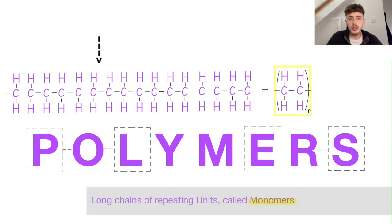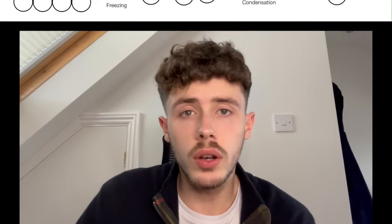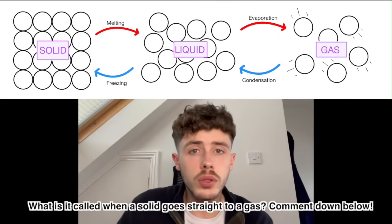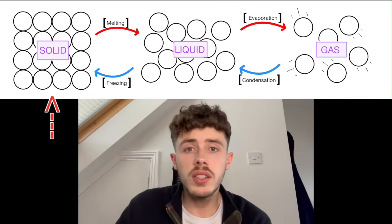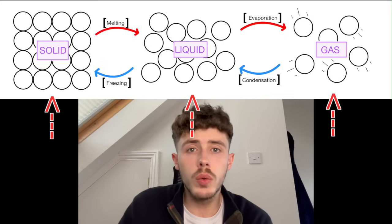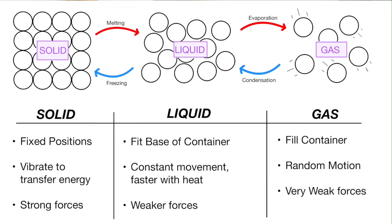After this, polymers. Polymers are long chains of repeated units, also known as monomers. And then we have the three states of matter: solid, liquid, and gas. It is important that you know each of the terms for switching between each of these states. This is what the particles will look like within each of those states, and also some properties about each of those states.